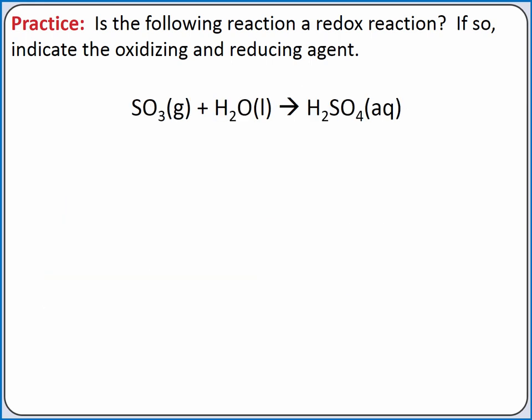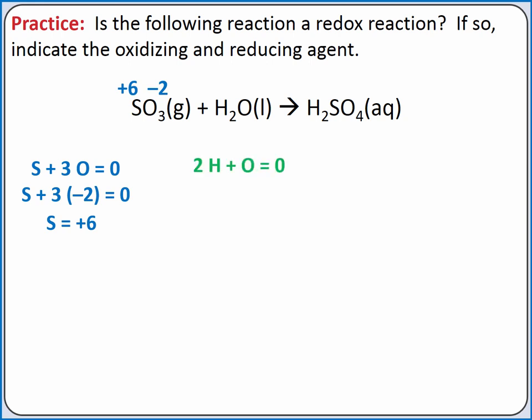Let's try another example. We'll start by assigning oxidation states. For sulfur trioxide, the most important rule is that the sum of the oxidation states of all atoms in a neutral molecule is zero. So sulfur plus three oxygen equals zero. Both sulfur and oxygen are in our table for nonmetals, but oxygen is higher in the table. So we assign negative two to oxygen and solve for sulfur. Sulfur has an oxidation state of plus six. For H₂O, the sum of the oxidation states of all atoms in the neutral molecule is zero. So two hydrogen plus oxygen equals zero. Hydrogen is higher in our table of nonmetals, so we assign it an oxidation state of plus one and calculate oxygen's oxidation state. Oxygen is negative two.